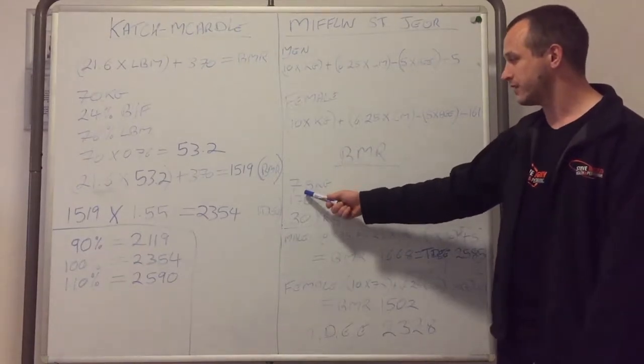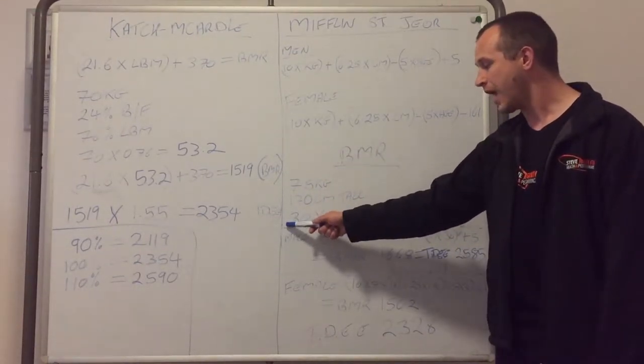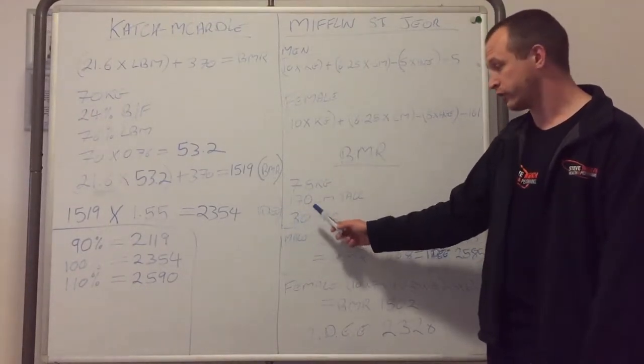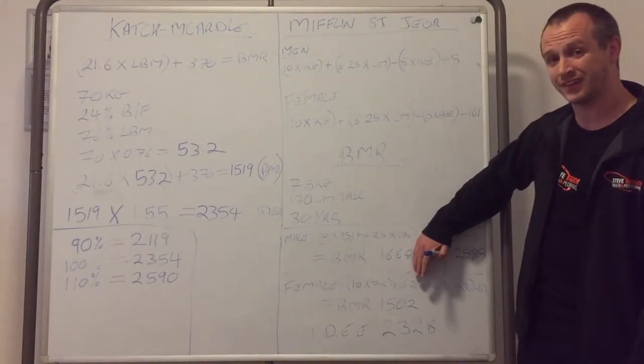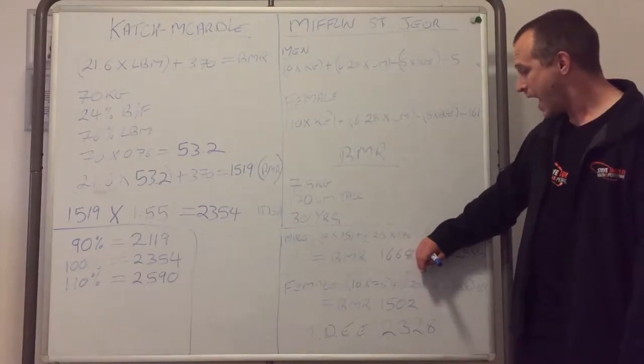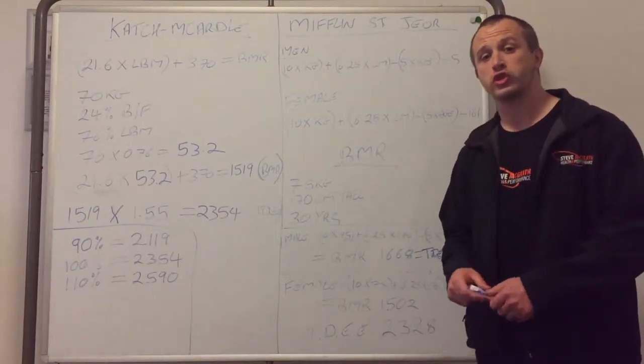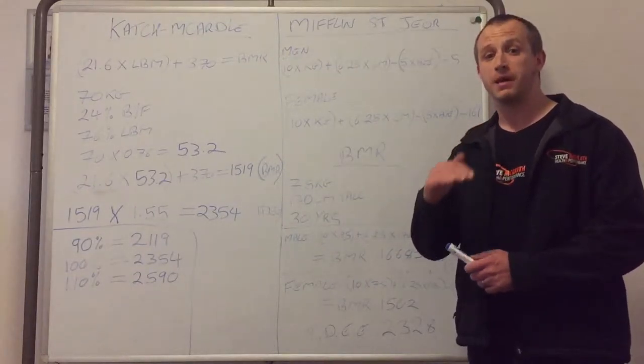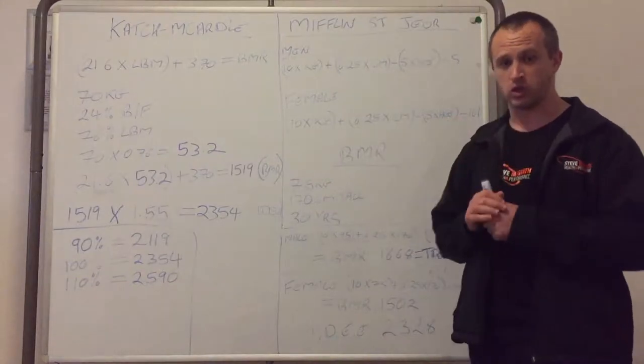So if we take a 75 kg person, 170 centimeters tall, and 30 years of age—for a man that gives us a BMR of 1668 calories. And for a woman we would get 1502 calories for their Basal Metabolic Rate, which is just enough calories to keep their basic body functions working.